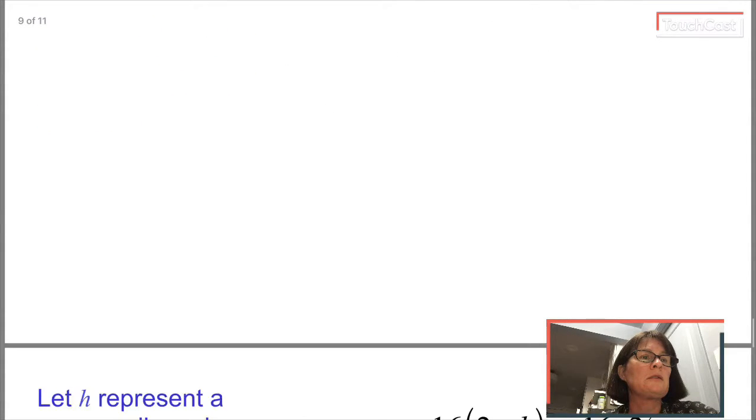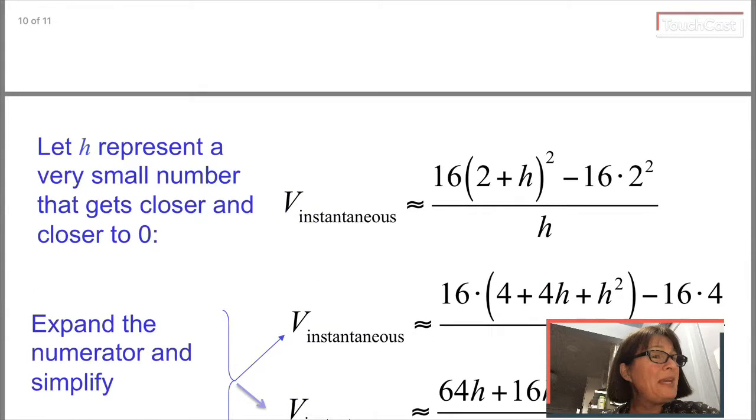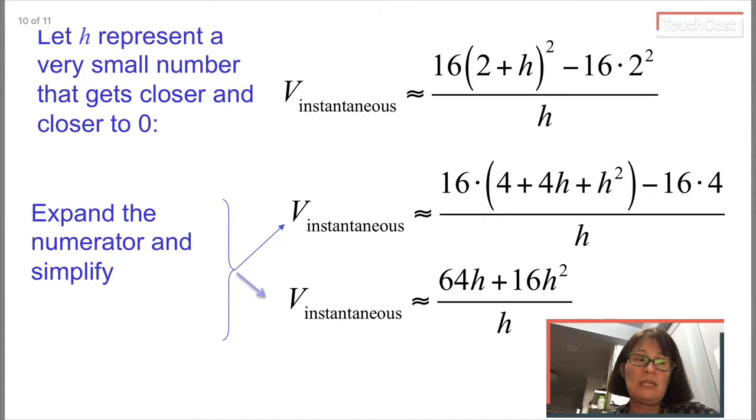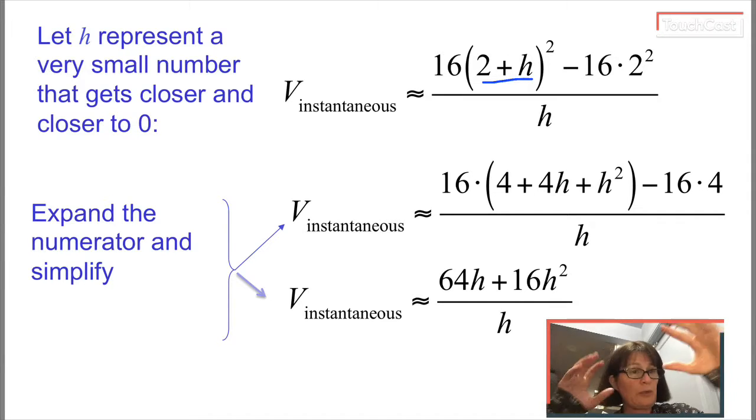So watch this. I can't let it be actually equal to zero because then I'll have divide by zero in the denominator, which is a big problem. If instead I think about a way to rewrite that numerator, remember that 2 plus h squared means to take 2 plus h and multiply it by itself.